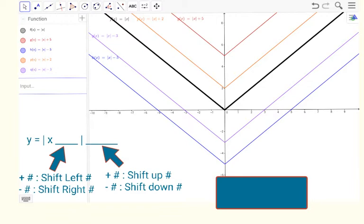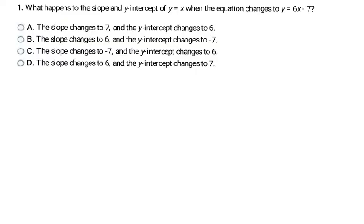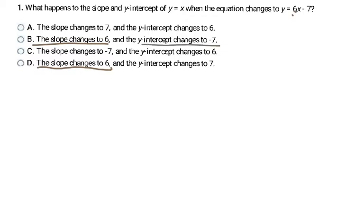Now let's look at some examples you might see in Study Island. This example asks: what happens to the slope and y-intercept of y equals x when the equation changes to y equals 6x minus 7? My slope number is always in front of x, so the slope is 6. My y-intercept is always the number added or subtracted at the end, so it changes to minus 7. That makes the answer B.